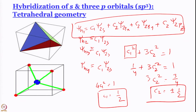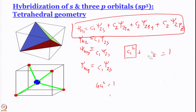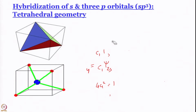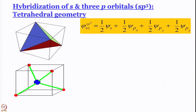The first wave function we can write is the totally symmetric one. Now let us find the second hybrid orbital. The hybrid orbitals must be orthogonal to each other, so I start writing φ_h2(sp3).